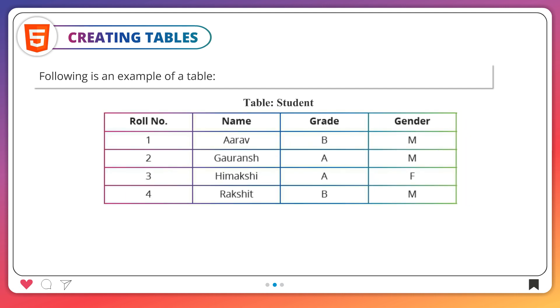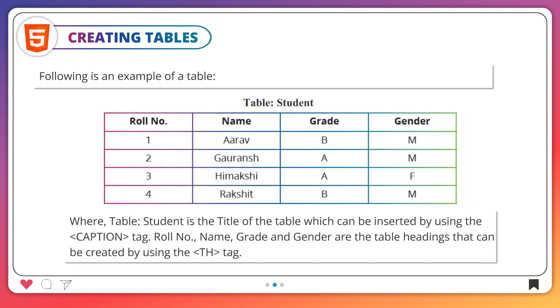Following is an example of a table: TABLE STUDENT, where TABLE STUDENT is the title of the table which can be inserted by using the caption tag. Roll number, name, grade, and gender are the table headings that can be created by using the TH tag.